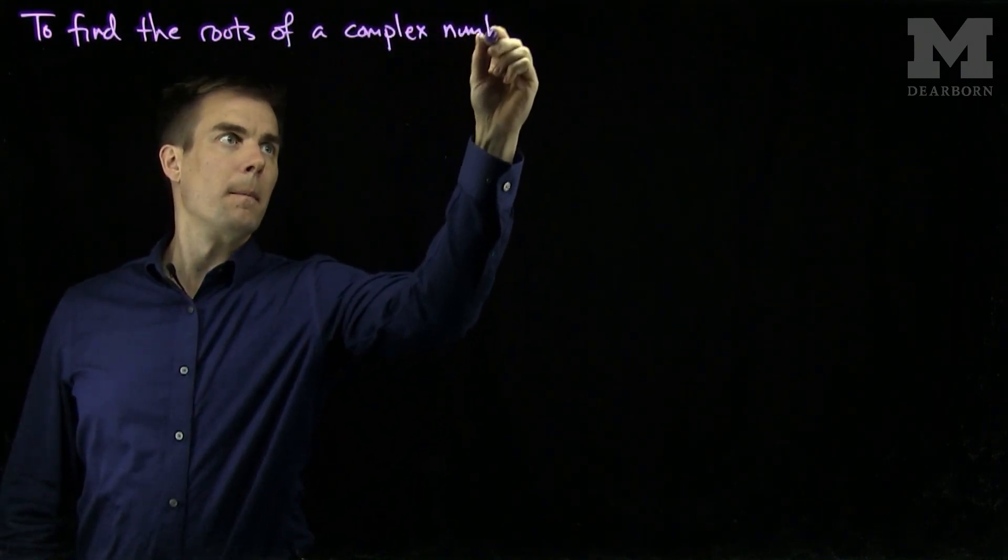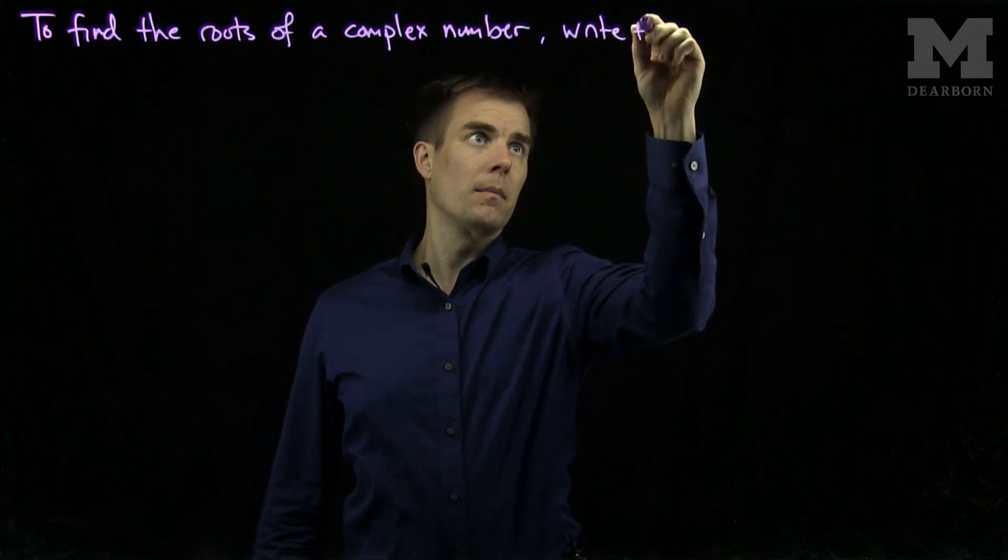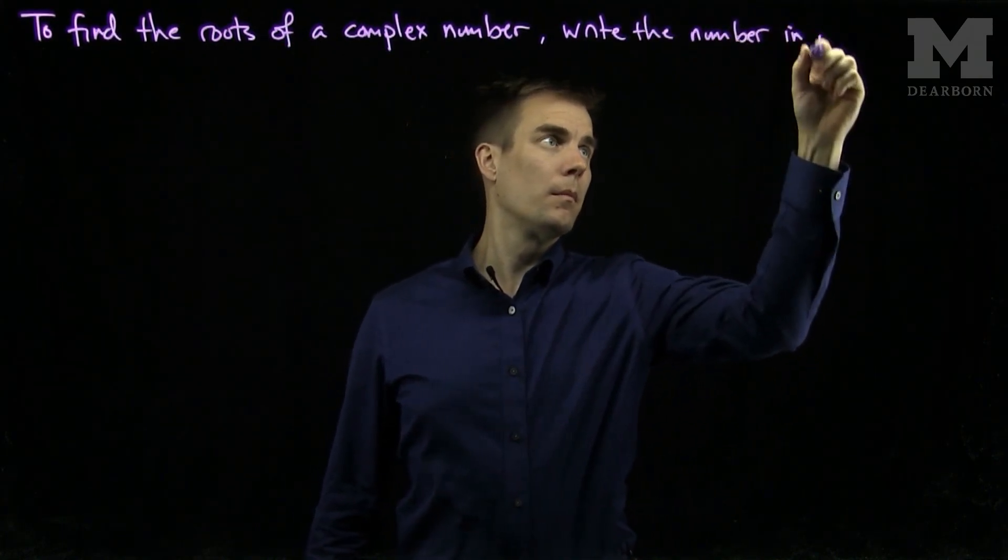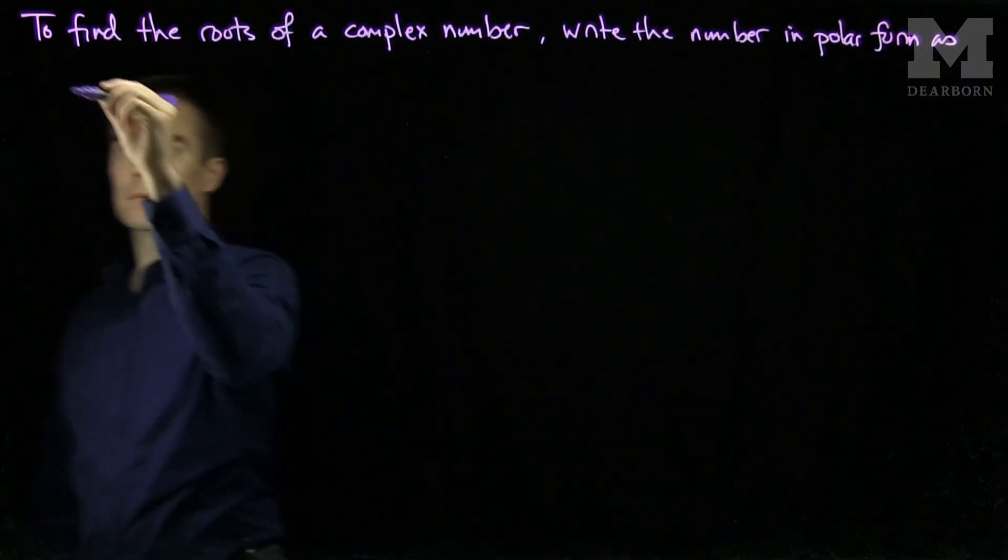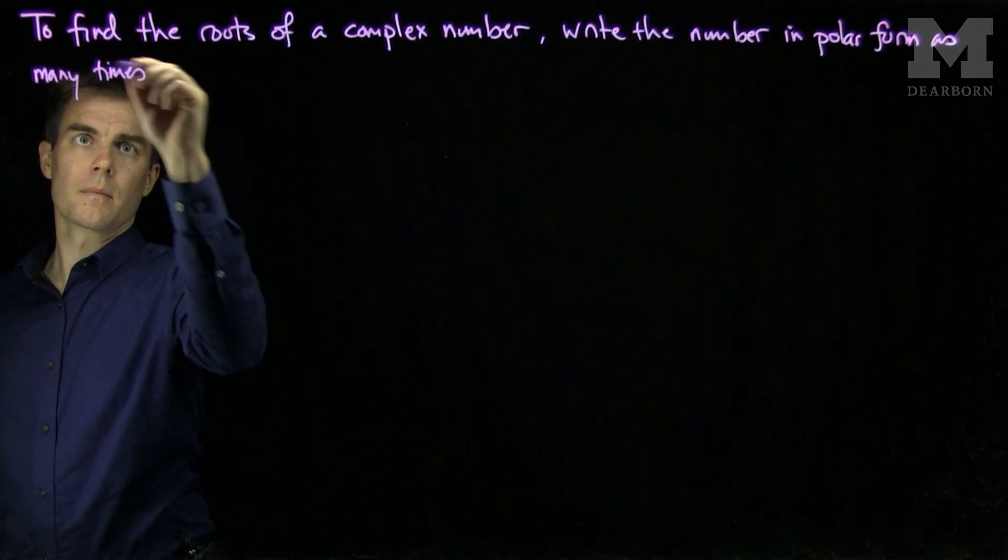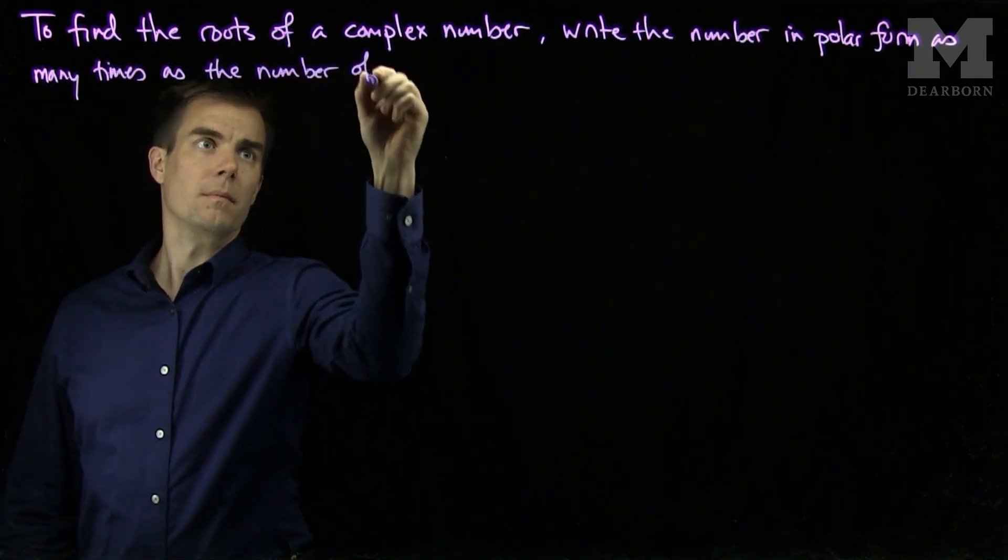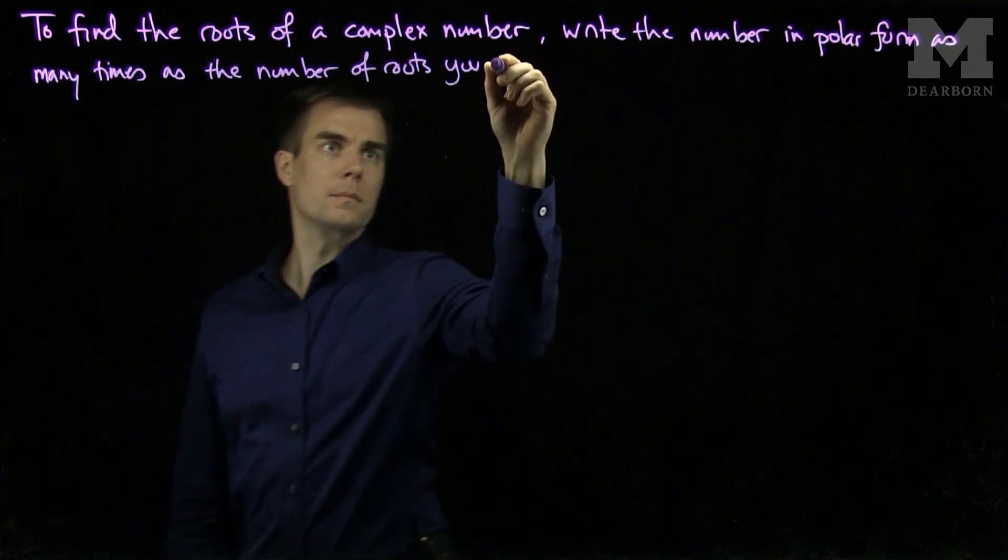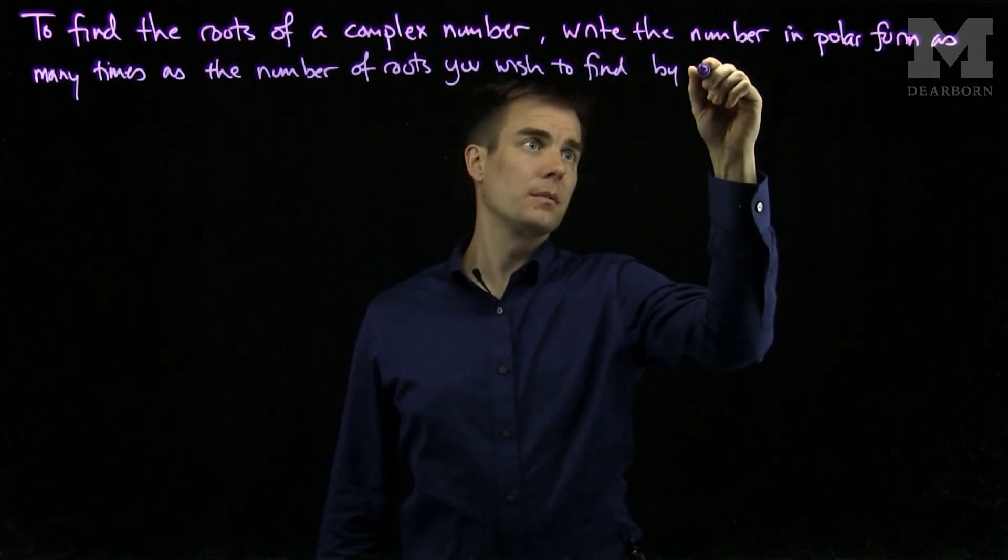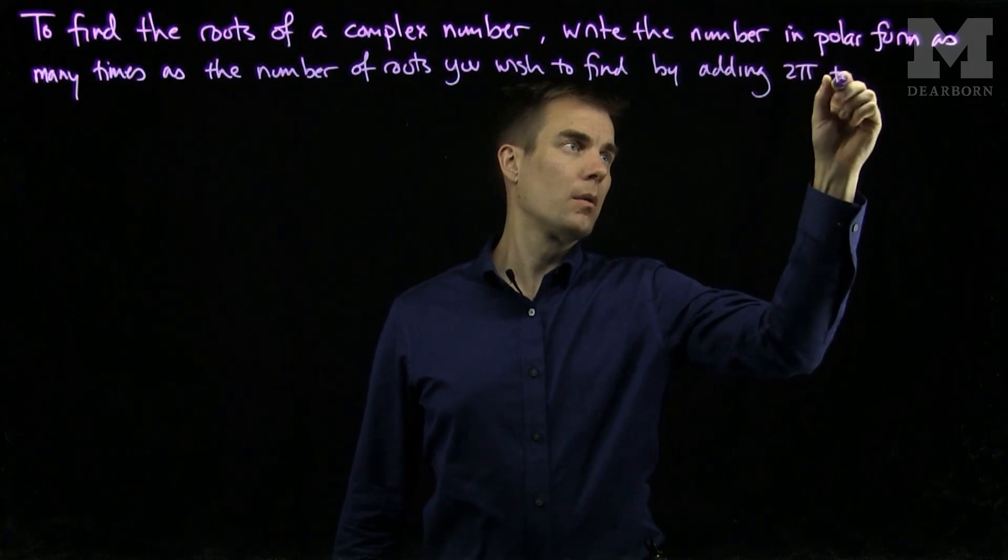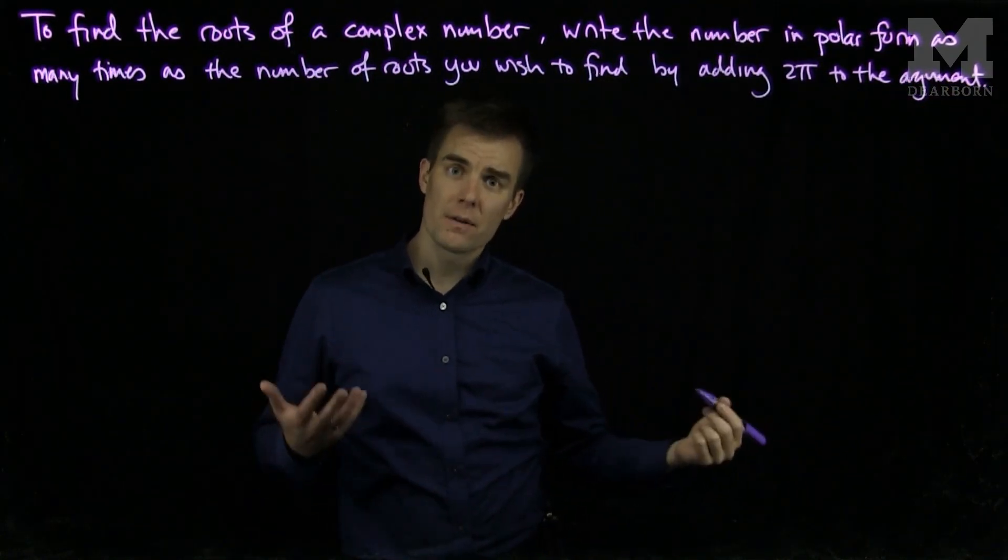write the number in polar form as many times as the number of roots you wish to find by adding 2π to the argument. Euler's formula tells us that adding 2π to the argument will not change the value of the complex number.